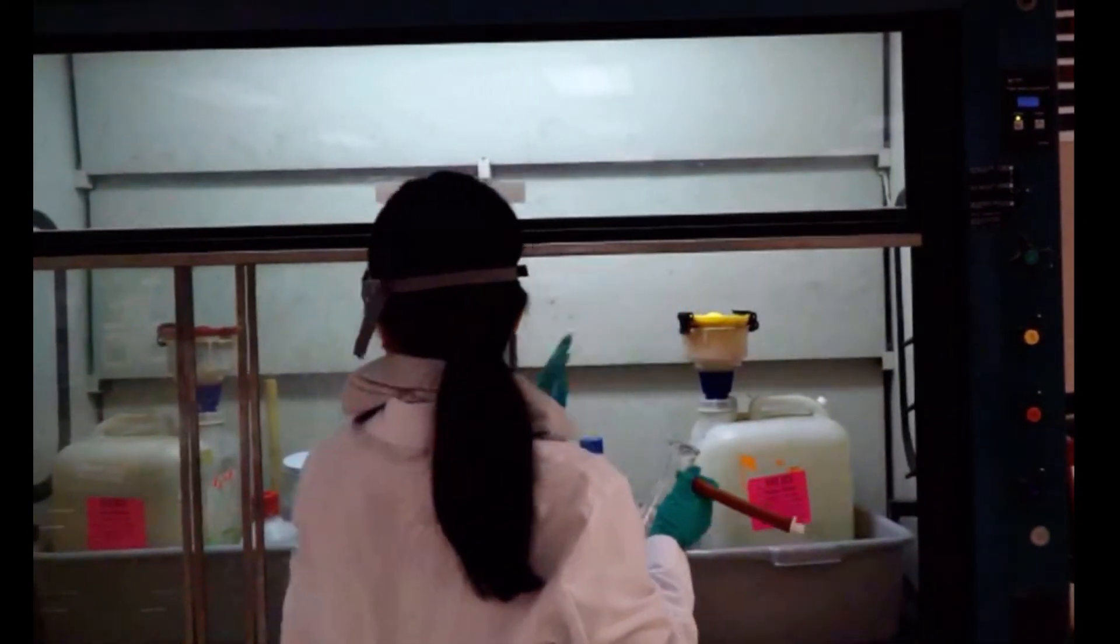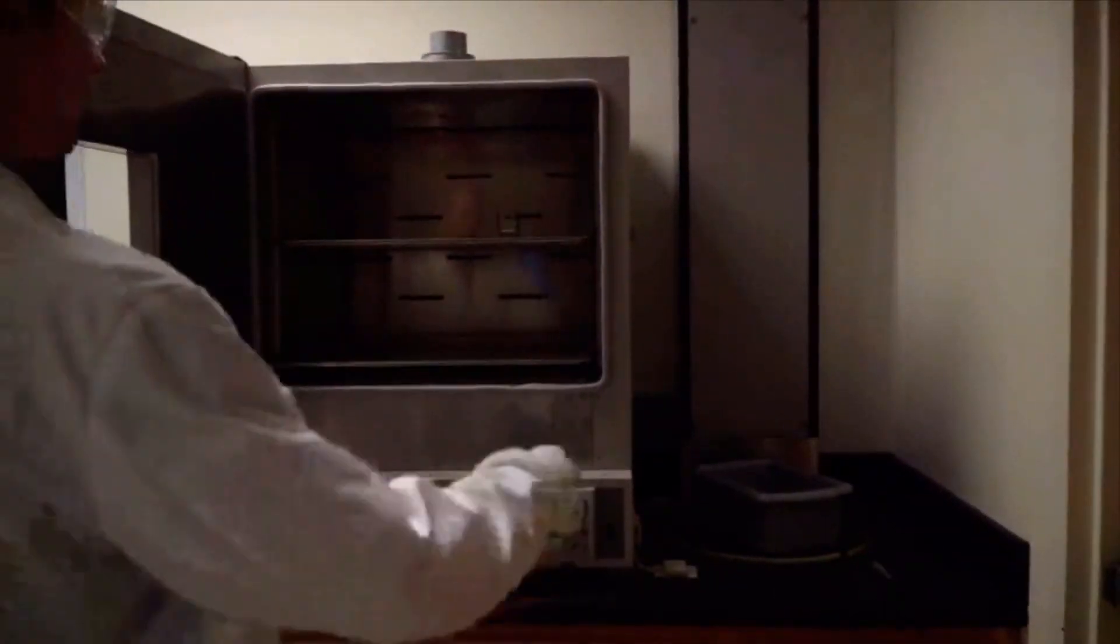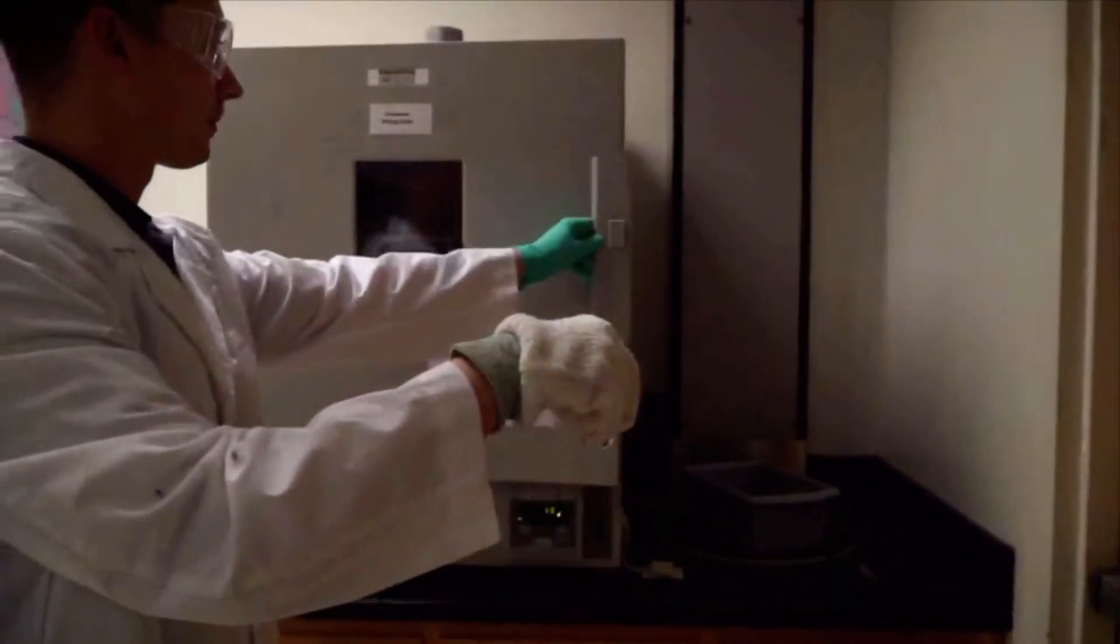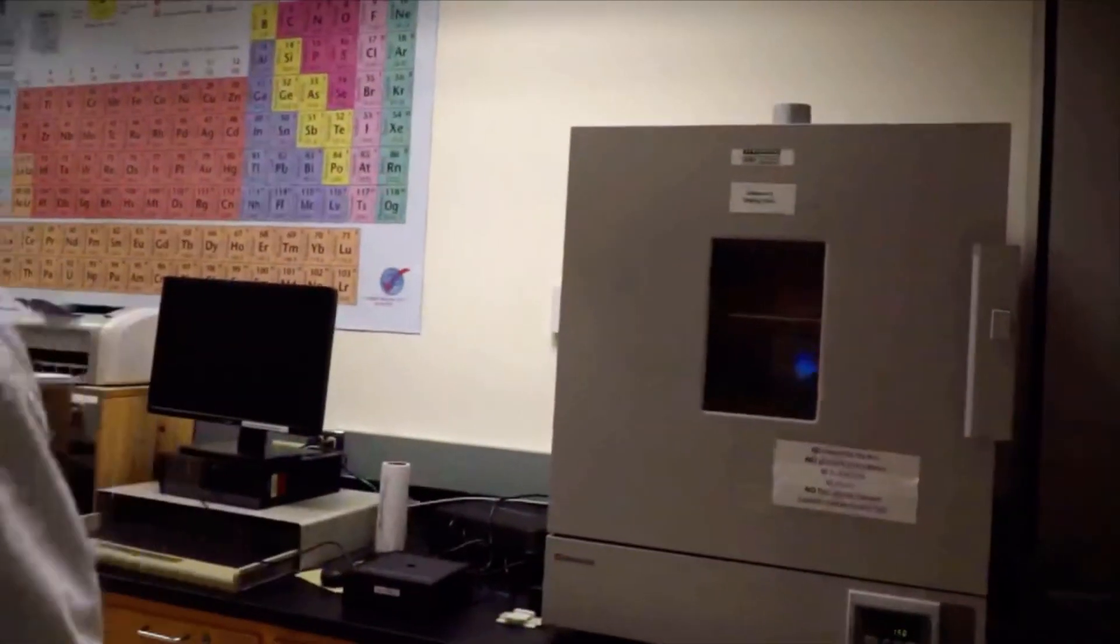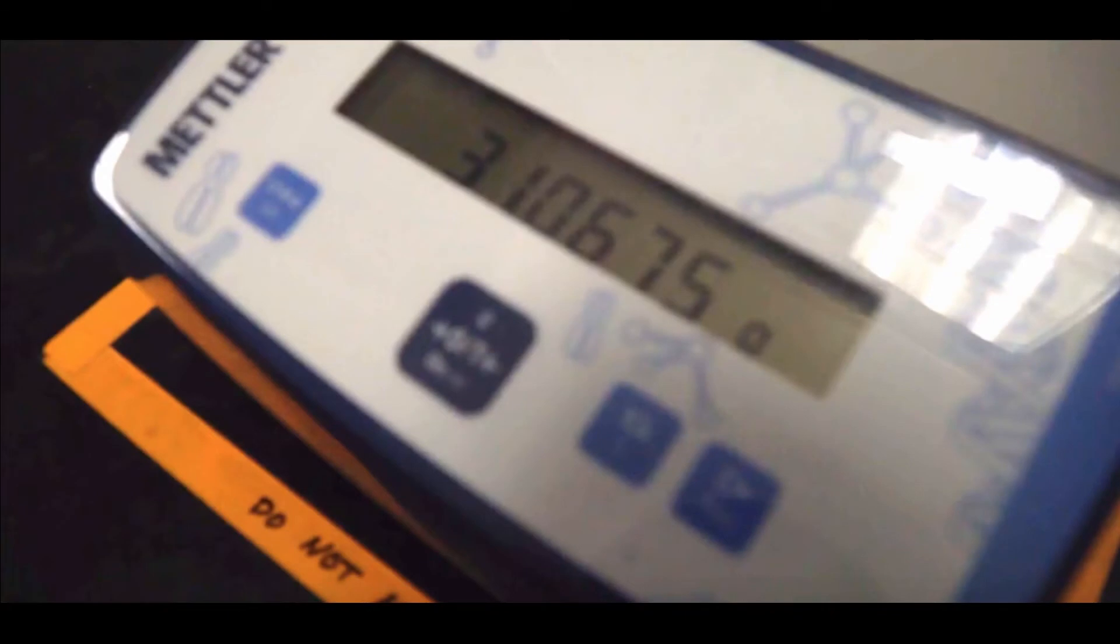In this experiment, constant mass is defined as 0.3 milligrams for two consecutive readings. Remember that temperature will affect the mass measurement, so be sure to cool your sample completely. This is an analytical balance. Always make sure that the mass readout goes to four decimal places.